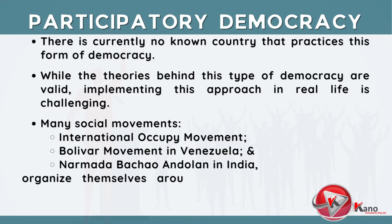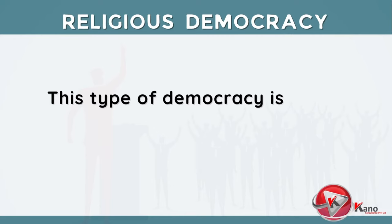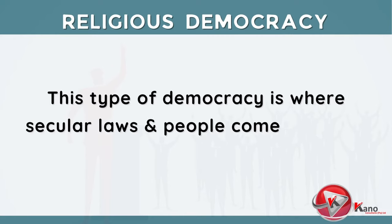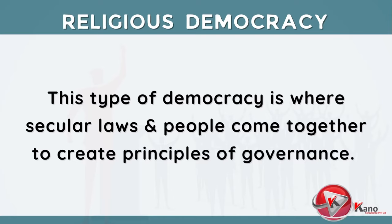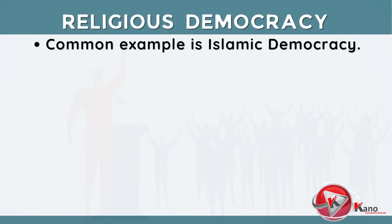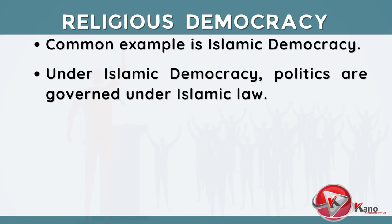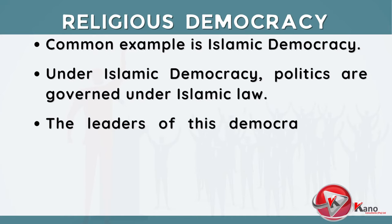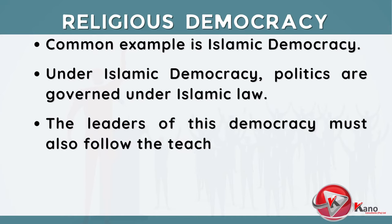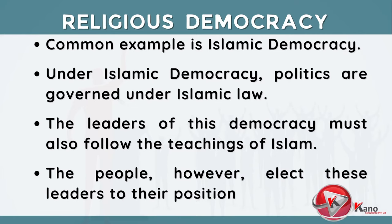The next type of democracy is religious democracy. This is where secular laws and people come together to create principles of governance. The most common example is Islamic democracy. Under Islamic democracy, politics are governed under Islamic law. The leaders of this democracy must also follow the teachings of Islam. The people, however, elect these leaders to their positions.